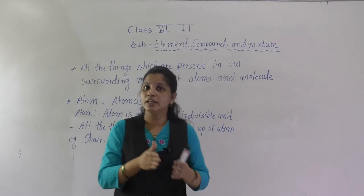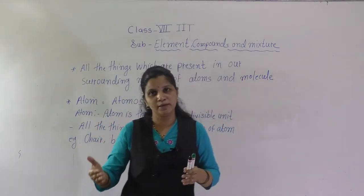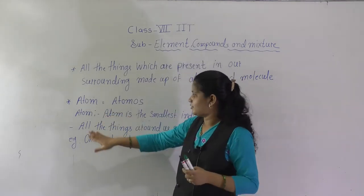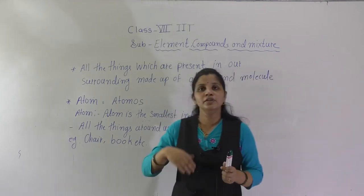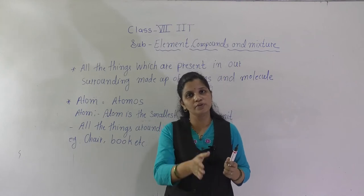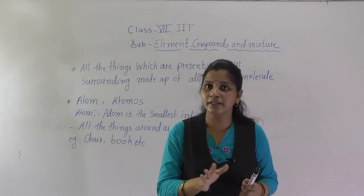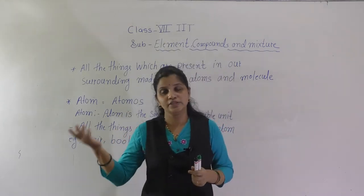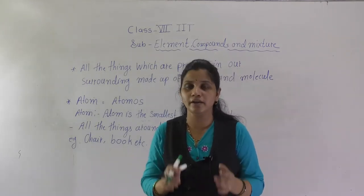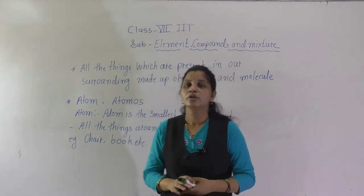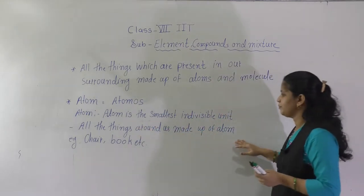In biology you have learned: cell, tissue, organ, organ system. The same idea applies here: atoms, molecules, elements, compounds. So what is the proper definition of atom? The atom is the smallest indivisible unit — you cannot divide the atom further. Inside the atom there are subatomic particles, but we will discuss atomic structure later. For now, all things around us are made up of atoms.